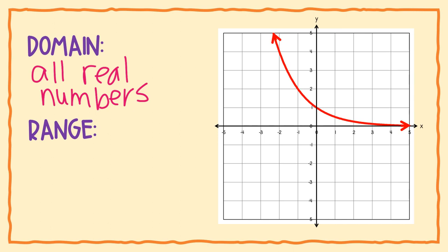For range, looking at the y axis up and down — the top arrow keeps going forever upward, and the other arrow just keeps going sideways, never going down. So the range is y is greater than 0, same as before. Exponential growth and decay have the same domain and range, and that will always be true for exponential functions as long as they have arrows.